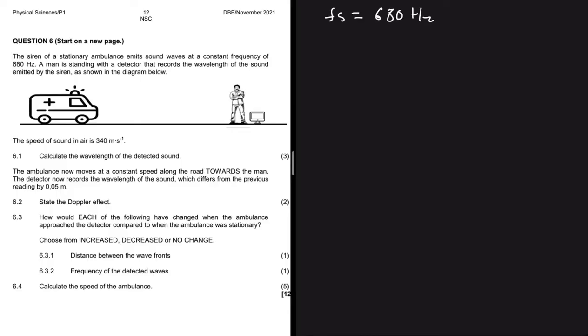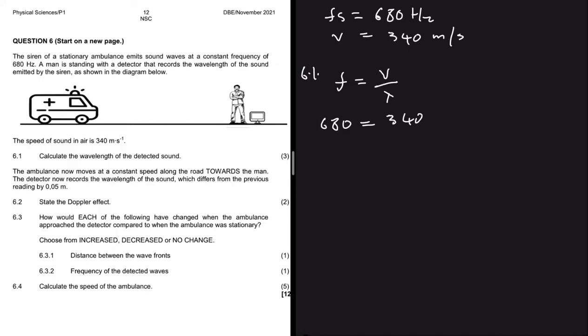The speed of sound in air is 340 meters per second. Question 6.1 says: calculate the wavelength of the detected sound. This is quite an easy one because we know that frequency equals the speed in the medium divided by the wavelength. We are given the frequency of the emitted sound as 680 hertz and the speed of sound in air as 340 meters per second.